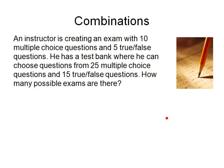Here's another combination problem. An instructor is creating an exam with 10 multiple choice questions and 5 true-false questions. He has a test bank where he can choose from 25 multiple choice questions and 15 true-false questions. From my 25 multiple choice questions I need 10, and from my 15 true-false questions I need 5. The order in which I put these doesn't make any difference because they're the same exam, just in a different order.